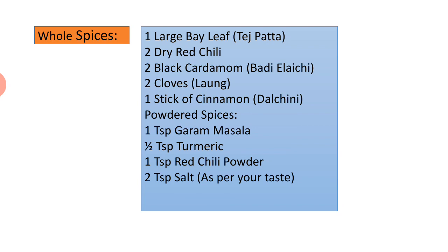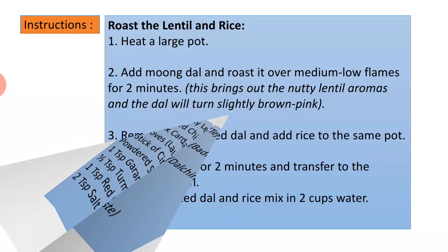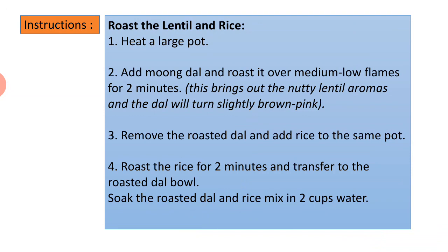Whole spices: one large bay leaf (tej patta), two dry red chilies, two black cardamom (badi elaichi), two cloves (long), and one stick of cinnamon (dalchini). Powdered spices: one tablespoon garam masala, half tablespoon turmeric, one tablespoon red chili powder, and salt to taste.